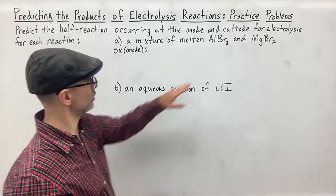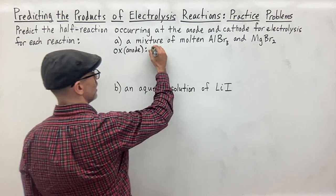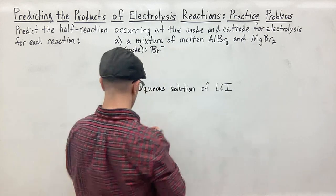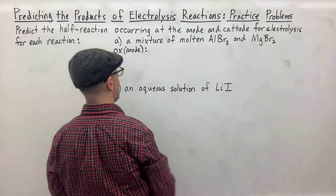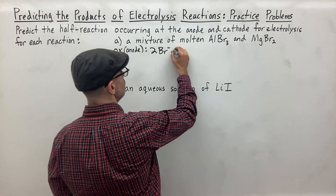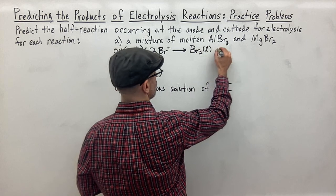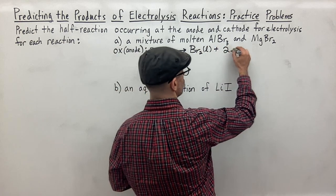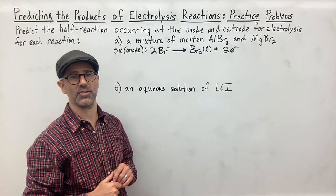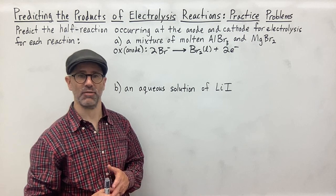The only option we have is bromine, the negative ion. The possible half reaction at the anode is: 2Br⁻ → Br₂(l) + 2e⁻. That's the only possible half reaction at the anode, since it's the only ion there that is able to give off electrons.